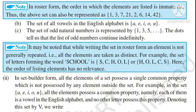It may be noted that while writing the set in roster form, an element is generally not repeated — all elements are taken as distinct। For example, the set of letters forming the word 'school' has two o's, so in roster form it will be written only once। So the two key points are: elements are not repeated, and the order of elements is not necessary।